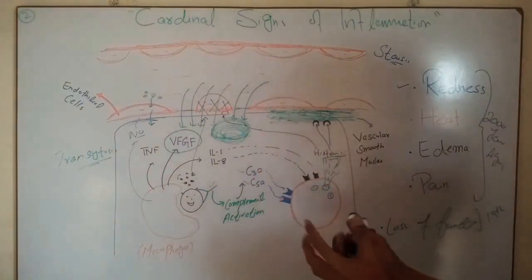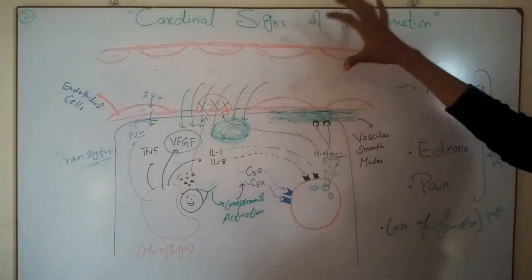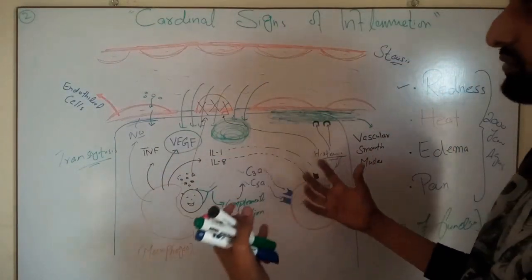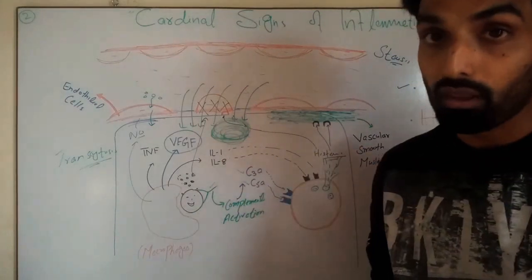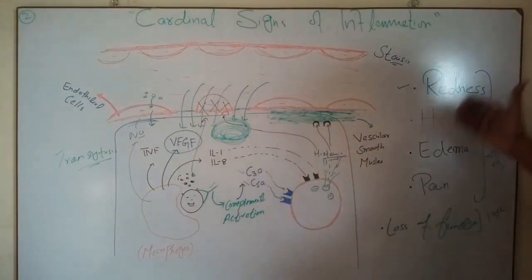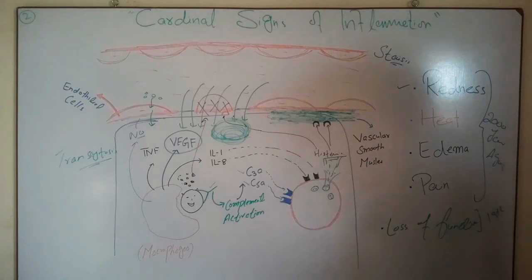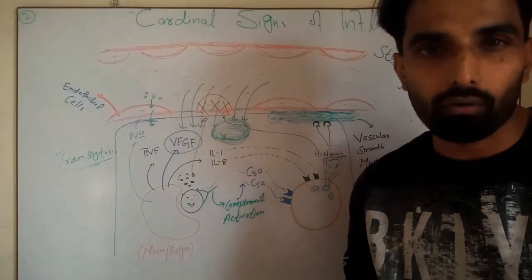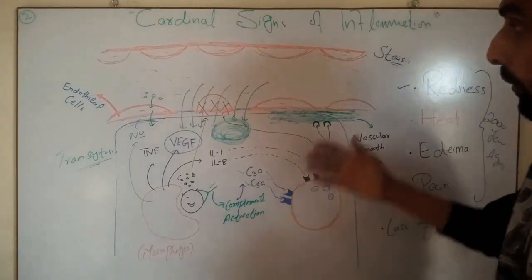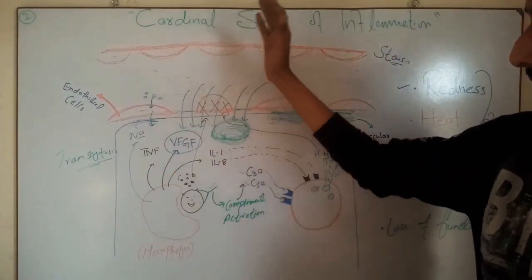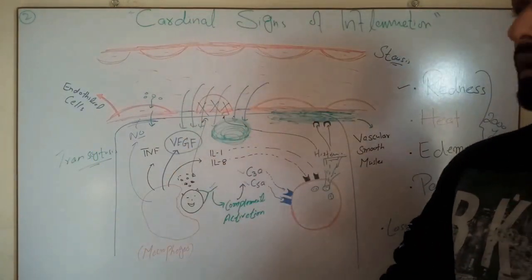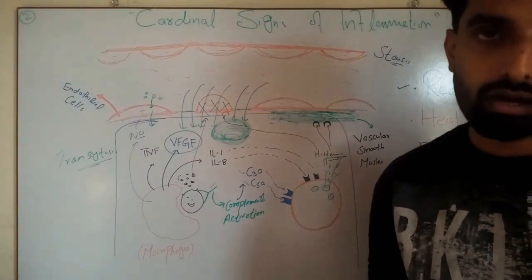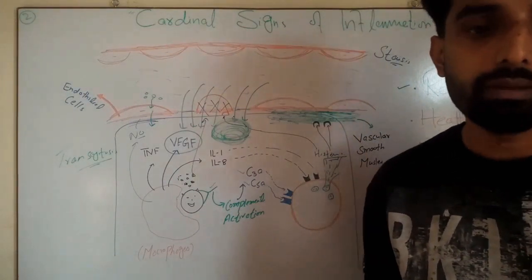So this is all about the cardinal signs of inflammation and how different cytokines and immune cells play important roles in developing them. In the next video we will talk about acute and chronic inflammation, and the mechanism of how immune cells migrate into the tissue and what they do to eliminate the pathogen or foreign particle. Thank you so much.